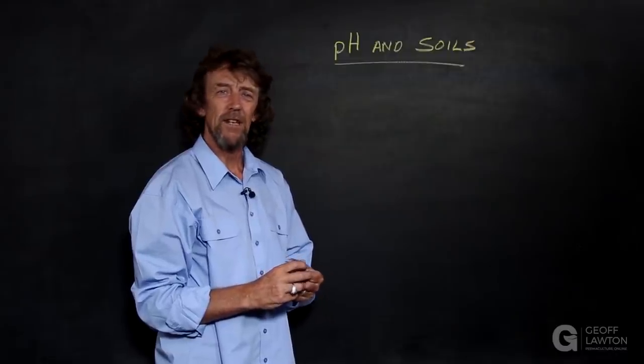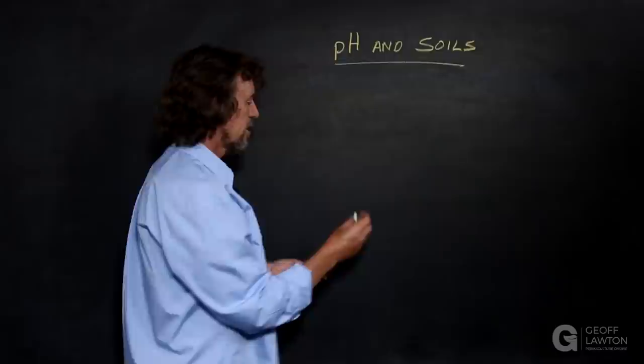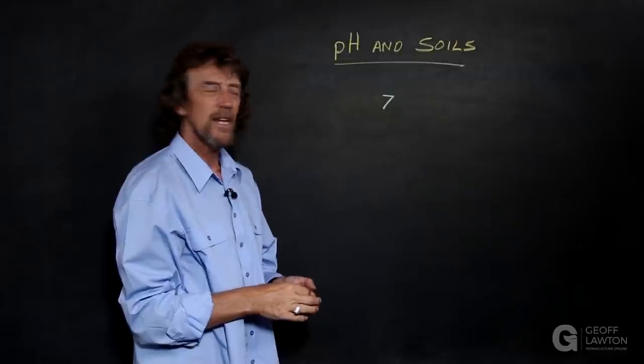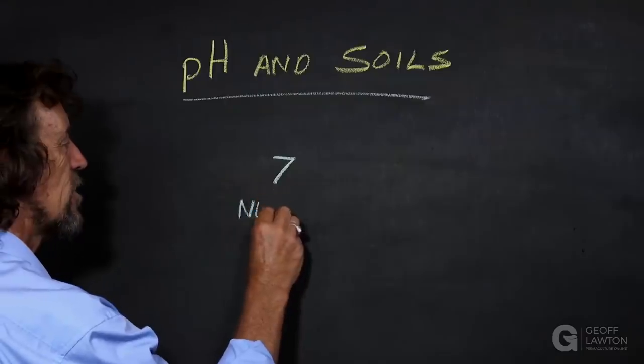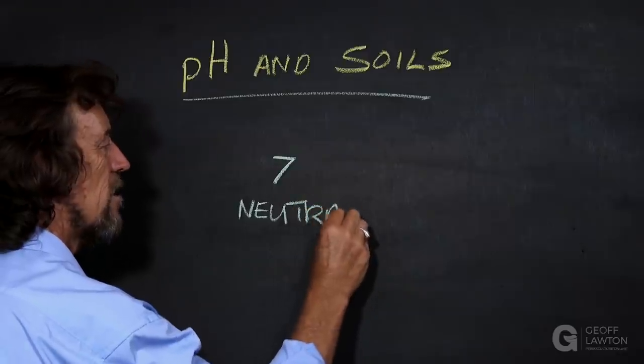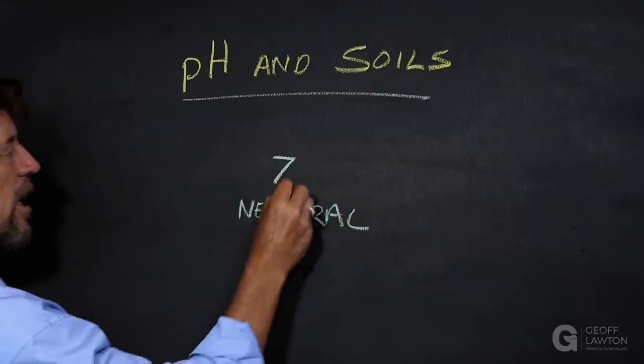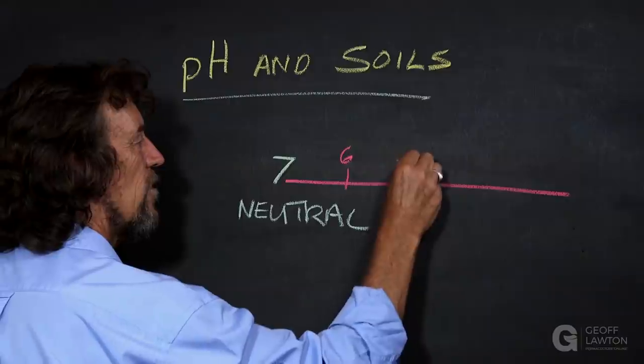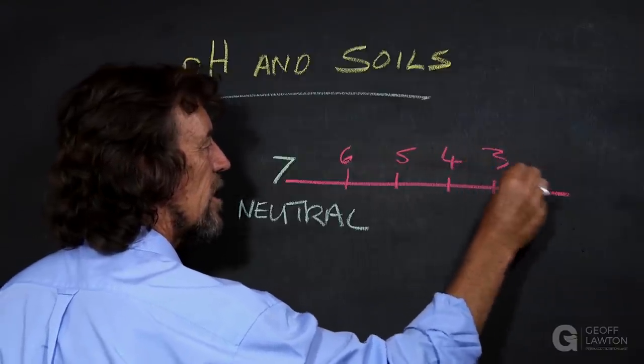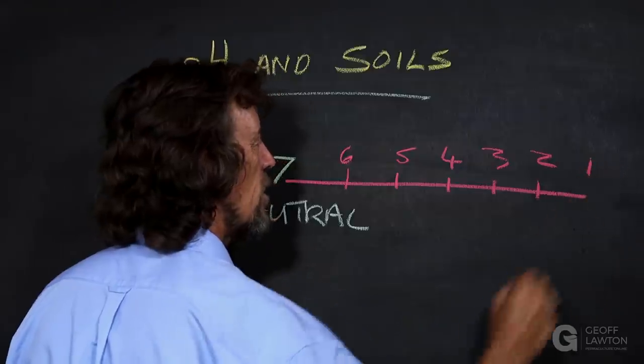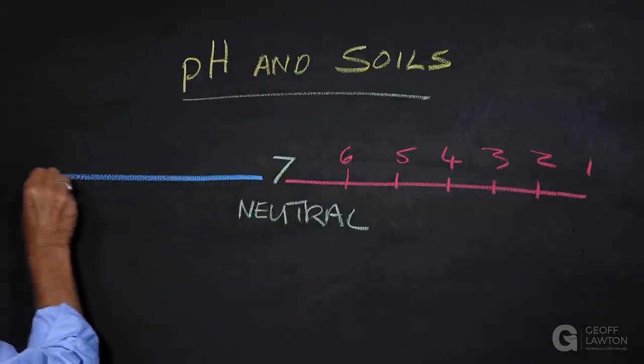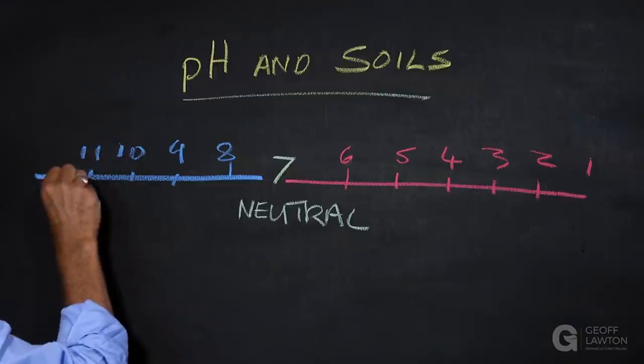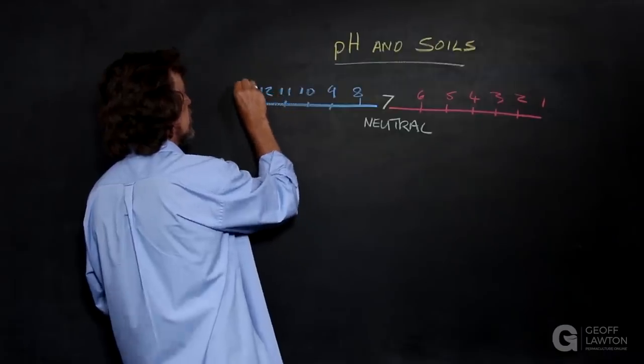Now, pH is a scale. It's a logarithmic scale with the number seven in the middle. That's neutral. So number seven is neutral. It's a funny scale and it goes out: six, five, four, three, two, one. And out in the other direction: eight, nine, ten, eleven, twelve, thirteen.